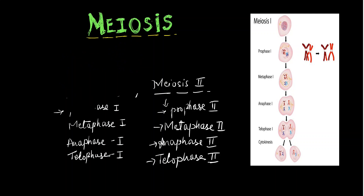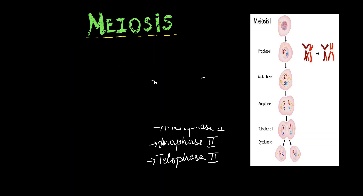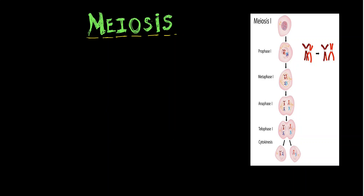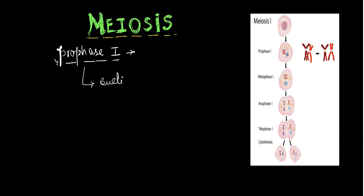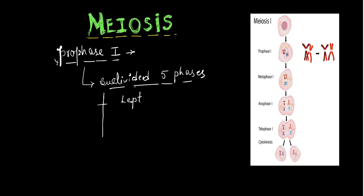We need to discuss each and every phase one by one. So, number 1, we will read about Prophase 1. Prophase 1 is the phase of meiosis 1. The pro phase of the first meiotic division is itself sub-divided into 5 stages: Leptotene, Zygotene, Pachytene, Diplotene, and Diakinesis.